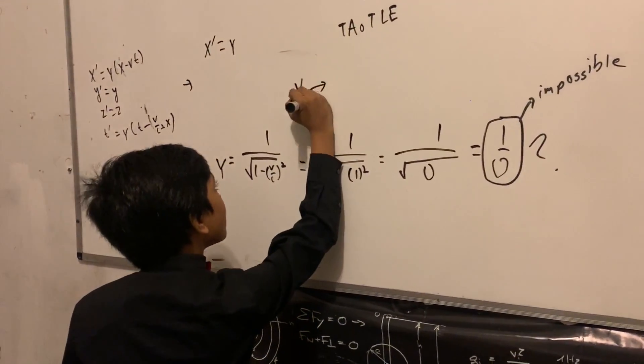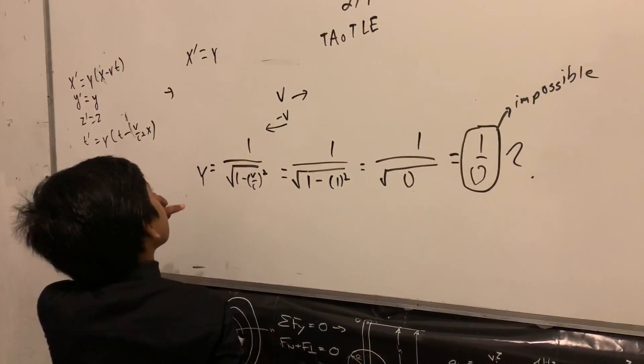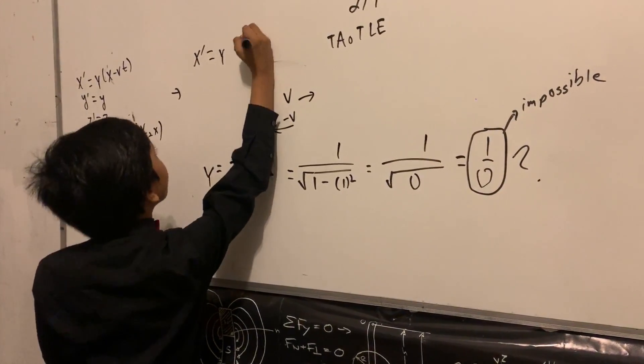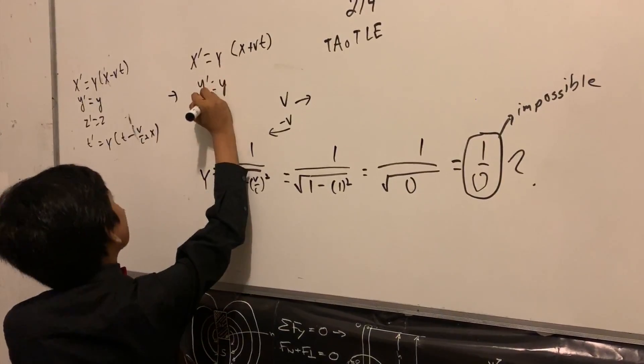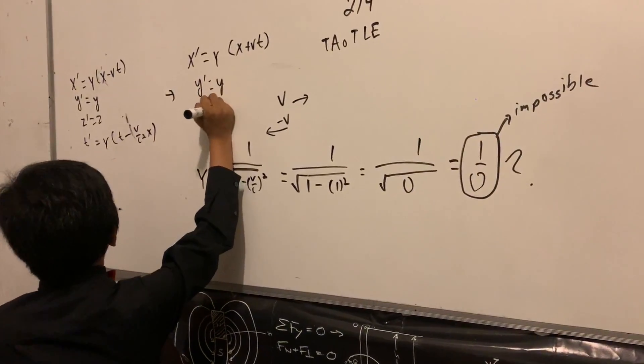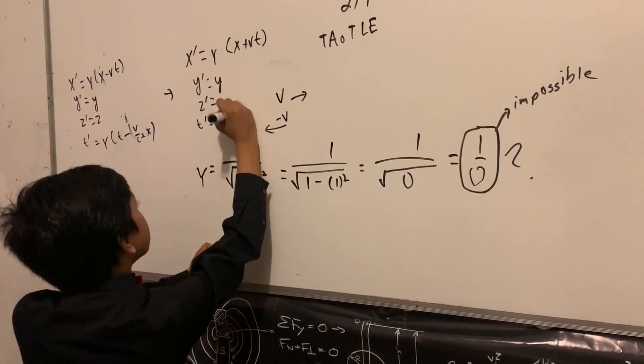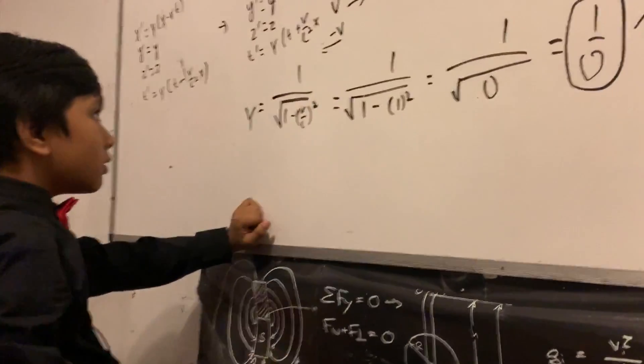So now that means that we can just change the signs if you were going this way. Now you go this way. If you are observing from the other direction, so now you just change all the signs, the signs next to v, which results in a change leading to this.